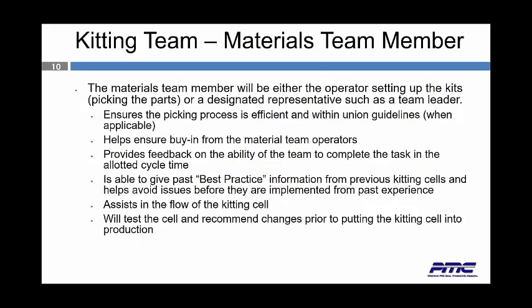The materials team member will be either the operator setting up the kits and picking the parts, or a designated representative such as a team lead. This person ensures the picking process is efficient within the union guidelines when applicable, helps ensure buy-in from the material team operators, and provides feedback on the ability of the team to complete the task in the allotted cycle time. He is able to provide past best practice information from previous kitting cells, helps avoid issues before they're implemented, assists in the flow of the kitting cell, and will test the cell and recommend changes prior to putting the kitting cell into production.